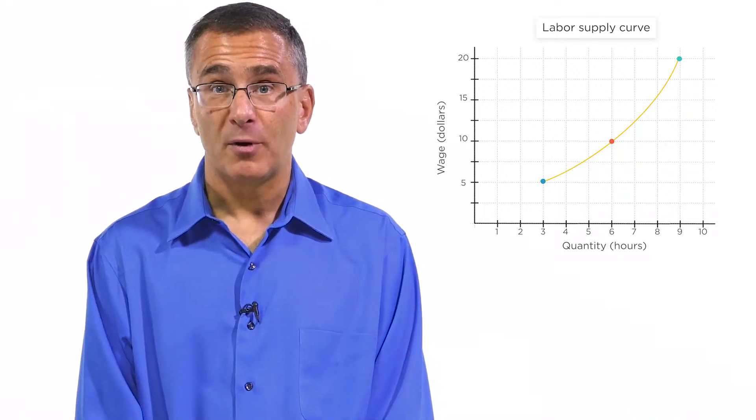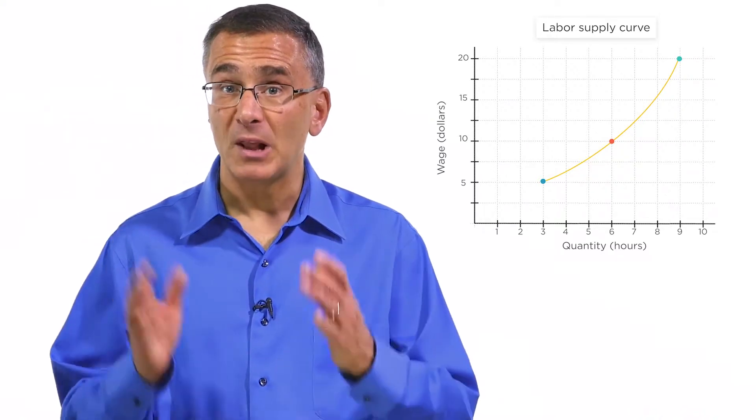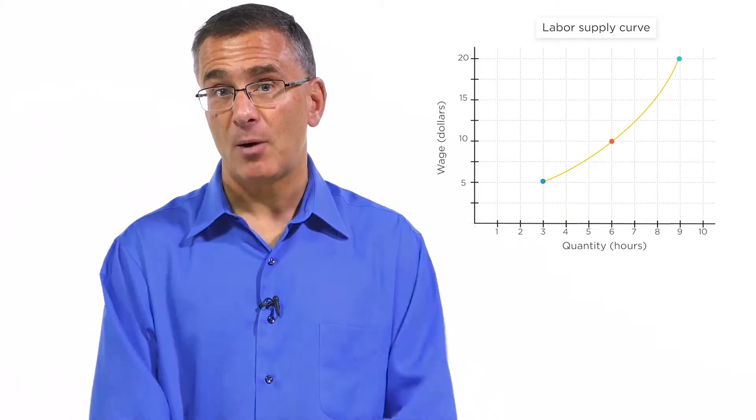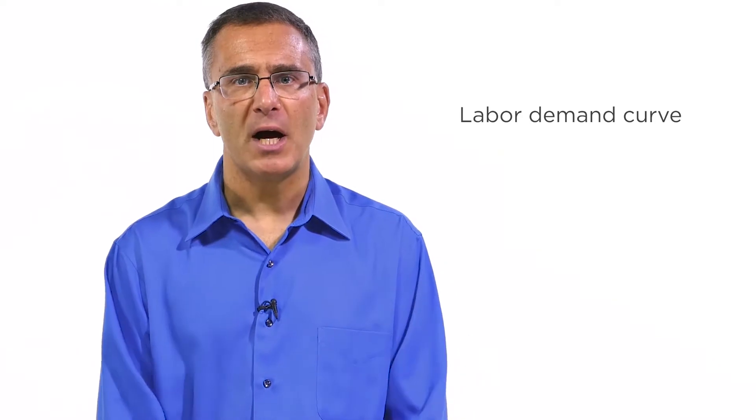We've seen where the labor supply curve comes from. Workers trade off between leisure and consumption to decide how many hours to work. What about the labor demand curve? How do firms choose how much labor to hire?